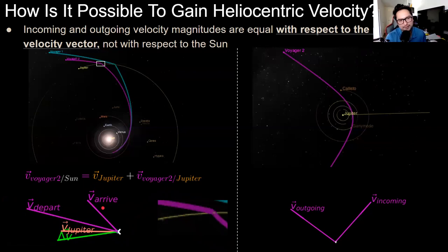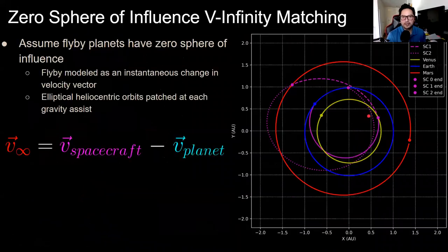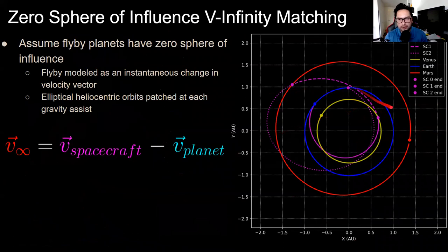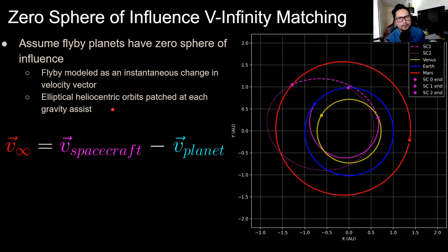To summarize the intuition: velocity vectors are rotated toward the planet's velocity vector, and therefore must increase in heliocentric magnitude to maintain the same planet-relative magnitude before and after the flyby. Now with the intuition established, we can move to v-infinity matching, which is how you actually calculate gravity assist trajectories. As an example, consider an Earth-Venus-Mars-Earth (EVME) trajectory.